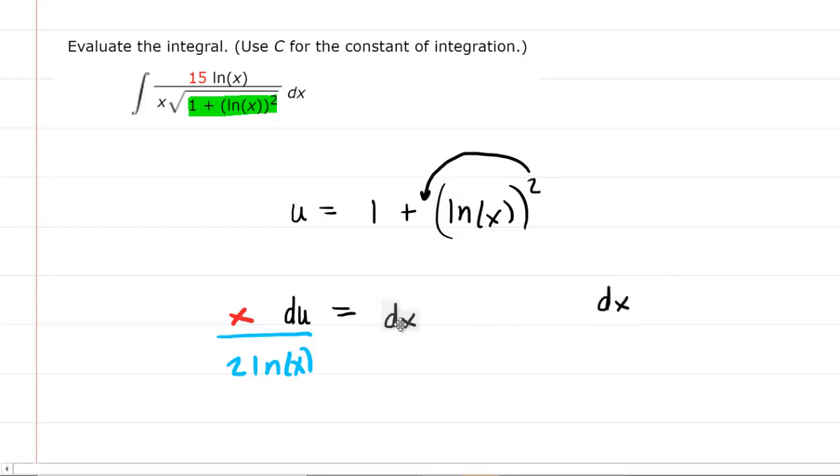We'll go back and make some substitutions here. We'll end up with the integral of 15 natural log of x all divided by x, then the square root. We had let u equal 1 plus the natural log of x squared, so that's just going to be u. Then this dx at the end is going to be x times du over 2 times the natural log of x.